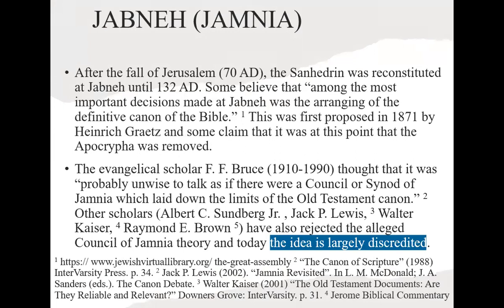You'll find a lot of writings today — even on Wikipedia — that say the Jewish Bible was only settled after the time of Jesus at what they call the Council of Jamnia. That idea has been largely discredited. If you come across the claim that the Jewish Bible was only decided on years after Jesus, that's not true. It was effectively in place hundreds of years before Jesus was born. That's why Jesus and the apostles referred to 'the law and the prophets' as something already settled.